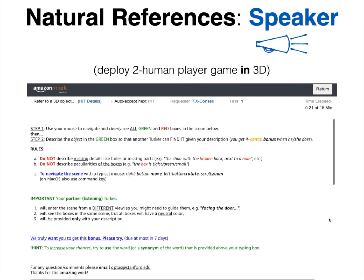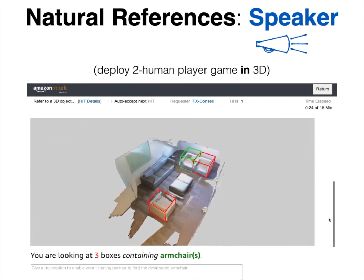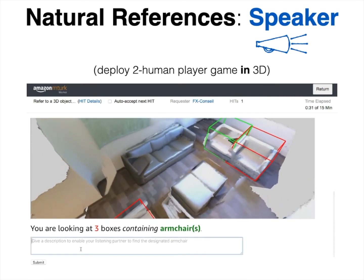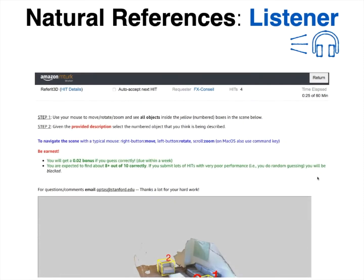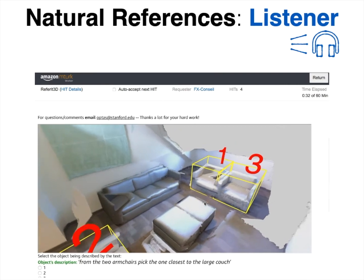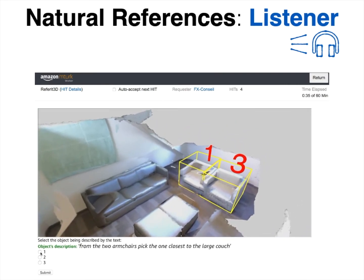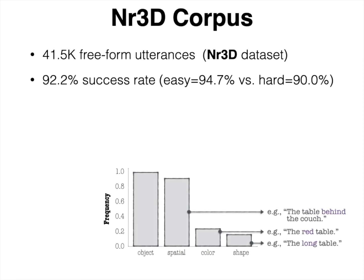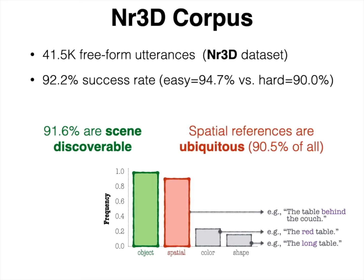To collect natural language data, we deploy a reference game between two humans. A human speaker observes a 3D scene that contains a designated target and its distractors and is asked to provide the discriminative reference for that target. This reference is then used by a human listener who, given the same scene, is asked to identify the target among the same class instances. The resulting dataset contains more than 40,000 utterances and human listeners were able to accurately identify the target 92.2% of the time. Perhaps more surprisingly, 91.6% of the time the speakers made references that were scene discoverable. Another key finding is that spatial reasoning is ubiquitous in these utterances and much more frequent than the use of color or shape attributes.